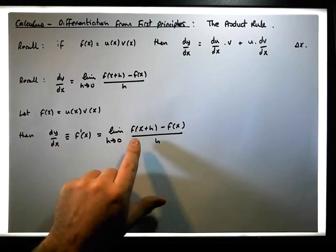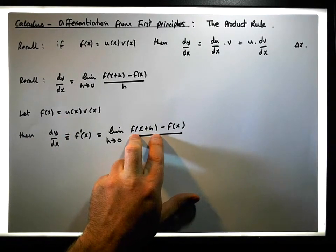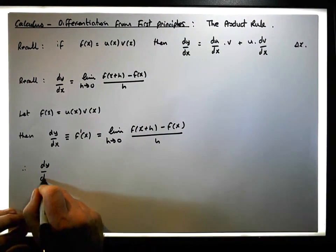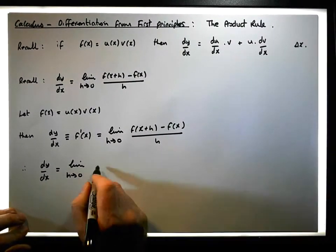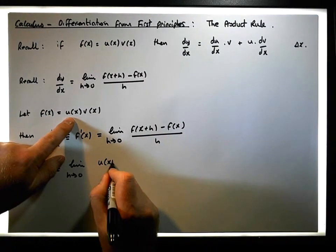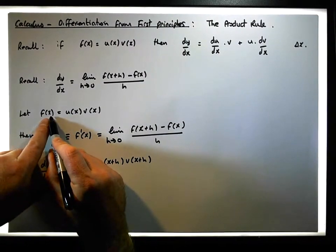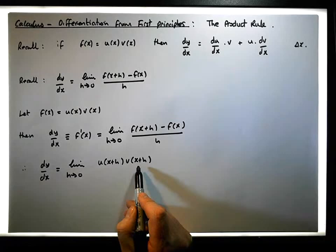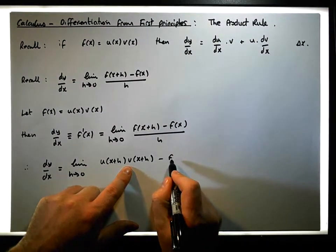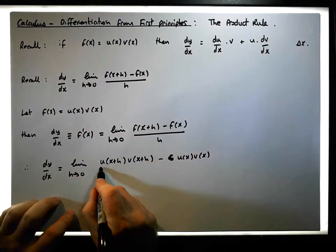We're going to evaluate the function f at x+h to see what we get, and then evaluate it at x. So dy/dx is equal to the limit as h tends to zero of: f(x+h) — which is u(x+h) times v(x+h) — minus f(x), which is simply u(x) times v(x), all divided by h.